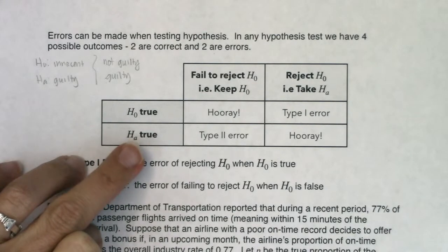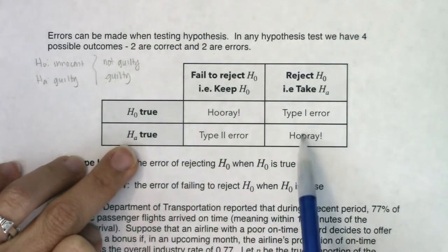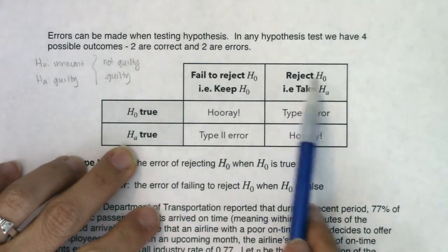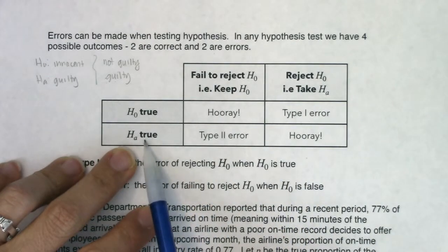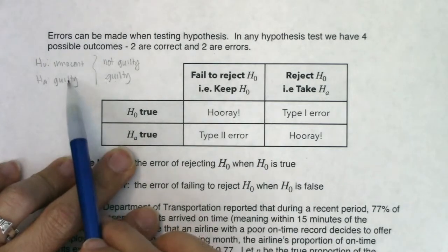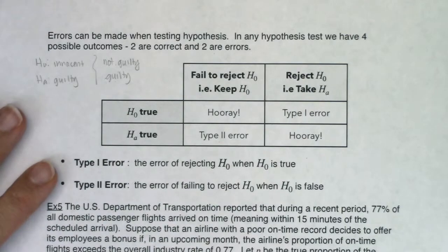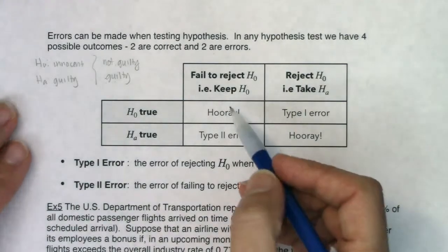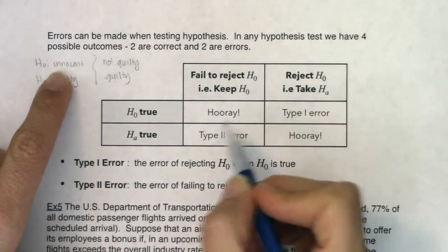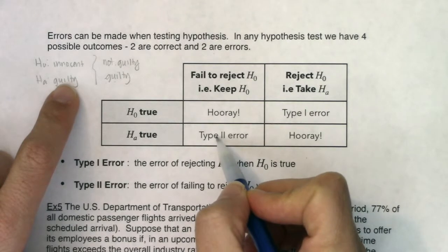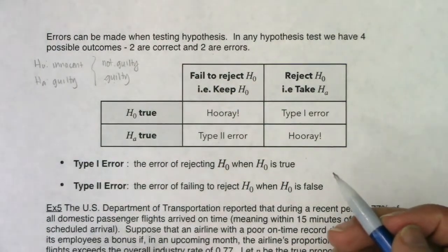What if somebody was actually guilty — what if the alternate really was true? If you were guilty and we found you guilty, that's a good thing. But here's the other error: what if somebody's guilty and we keep the null, saying they're not guilty? That's the Type 2 error. To summarize: innocent person, not guilty — great; innocent person, guilty — bad; guilty person, not guilty — bad; guilty person found guilty — good.